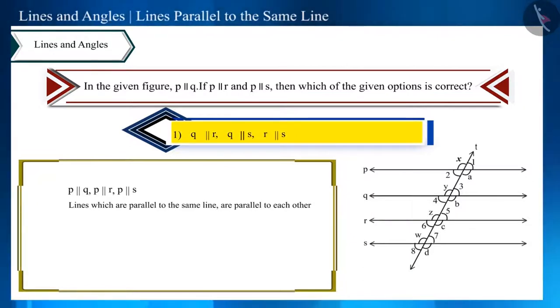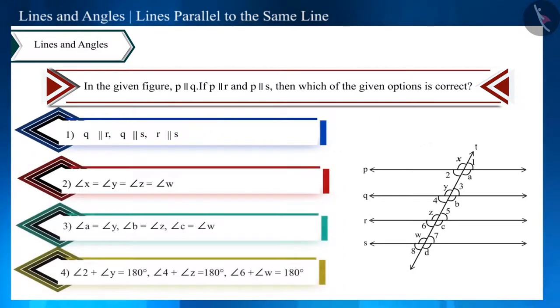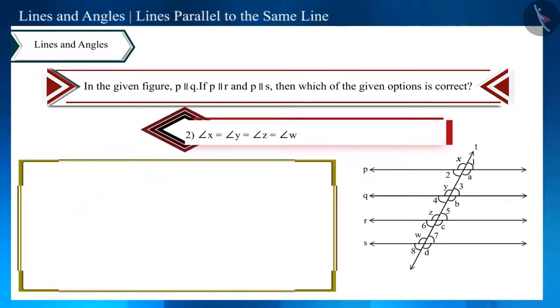Is the second option also correct? Here it is given that these angles are equal. Friends, these lines are parallel to each other, therefore these angles will be corresponding angles. We know that corresponding angles are equal, so this option is also correct.